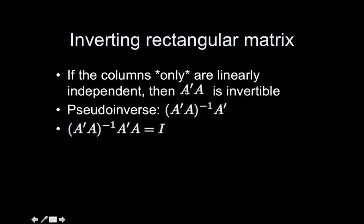So this thing here is going to be a 4 by 100 multiplied by 100 by 4, so the result will be a 4 by 4. So it is square, and as long as the columns are linearly independent, it will be invertible.